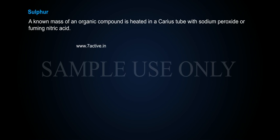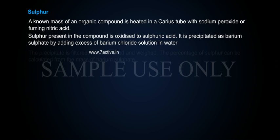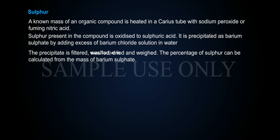Sulfur. A known mass of an organic compound is heated in a Carriers tube with sodium peroxide or fuming nitric acid. Sulfur present in the compound is oxidized to sulfuric acid. It is precipitated as barium sulfate by adding excess barium chloride solution in water. The precipitate is filtered, washed, dried and weighed. The percentage of sulfur is calculated from the mass of barium sulfate.